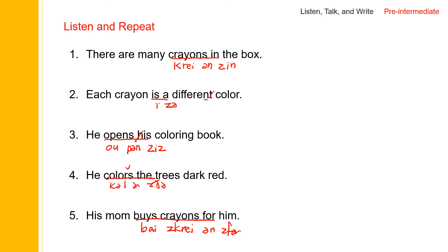His mom buys crayons for him. Let's read the sentences one more time: There are many crayons in the box. Each crayon is a different color. He opens his coloring book. He colors the trees dark red. And finally, his mom buys crayons for him.